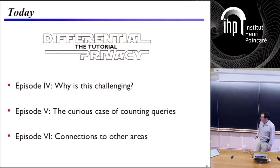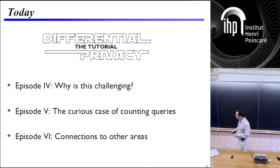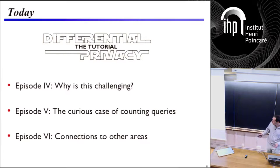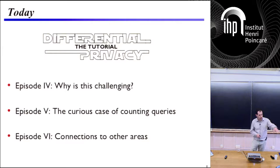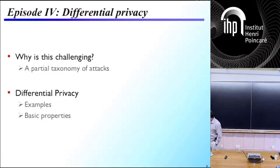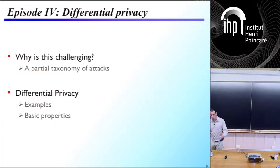Today: three episodes. The first — episode four — will be setting up the problem and talking about differential privacy. Episode five will be called 'The Curious Case of Counting Queries,' although it's only about two-thirds of that episode. And episode six will be on connections to other areas — we'll try to branch out in the last hour and see why differential privacy has relationships to other mathematical areas, some nearby and some not so much. In the first 50 minutes, we'll start by understanding why this problem is non-trivial to formalize, and then talk about the formalization called differential privacy.